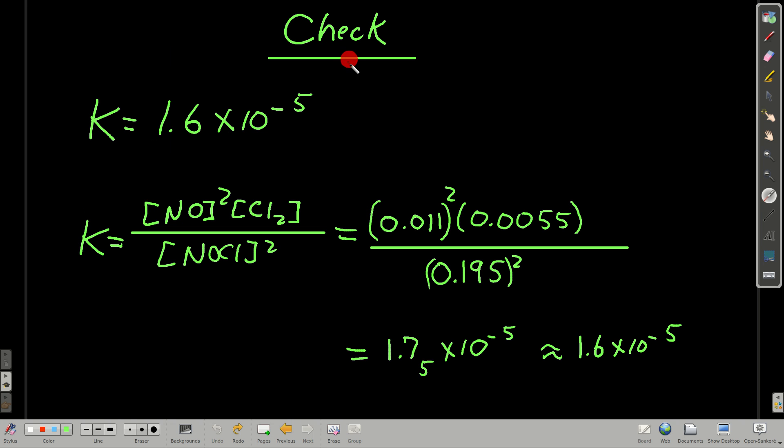Another check we can do is we can plug back into our equilibrium constant expression. Our equilibrium concentrations for nitrogen monoxide, chlorine, and so forth, we plug these guys in, and we get 1.75 times 10 to the minus 5th, which is pretty close to 1.6 times 10 to the minus 5th. The reason it's not right at 1.6 times 10 to the minus 5th is that approximation. We were kind of on the border. We were pushing a little bit, but it was close to 5%, so we called it good.